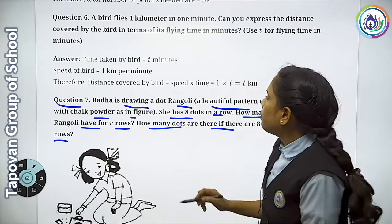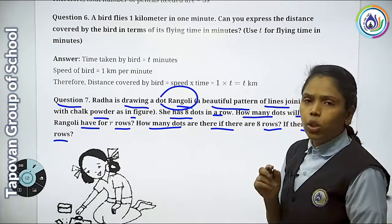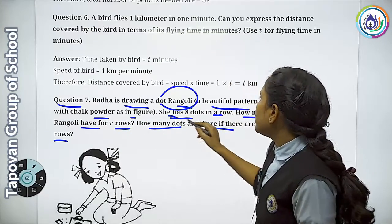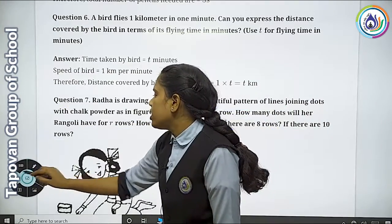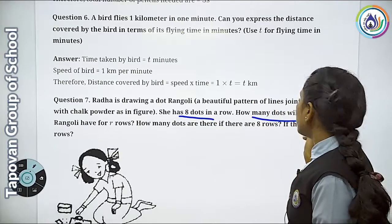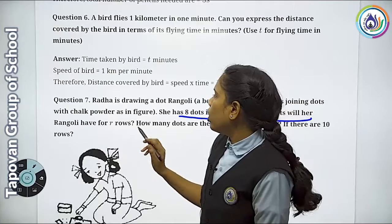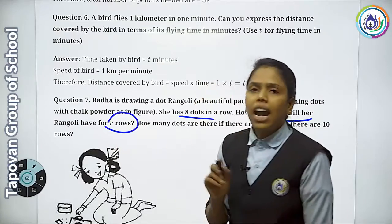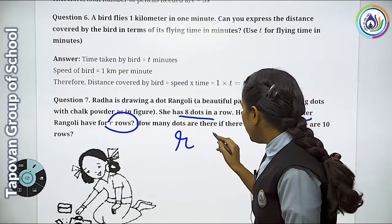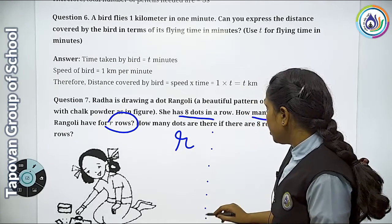So here Radha is a girl who is making a rangoli — a dot-dot rangoli. She has drawn a pattern through dots, through chalk powder. C has 8 dots — so total dots in one row is 8. How many dots will the rangoli have? The number of rows we will take as R. There are 8 dots in one row.